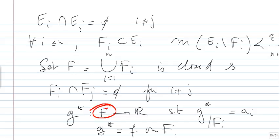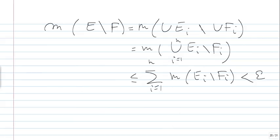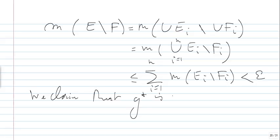We claim that G* is continuous. This is a real analysis exercise. When you have a function defined on a disjoint union of closed sets and it is constant on each one, this function is continuous. Let X_0 be an accumulation point of F. Because F is closed, X_0 belongs to F, so there exists I_0 such that X_0 belongs to F_{I_0}.